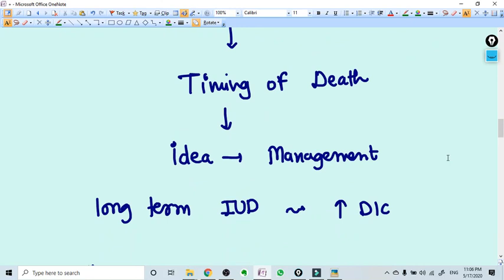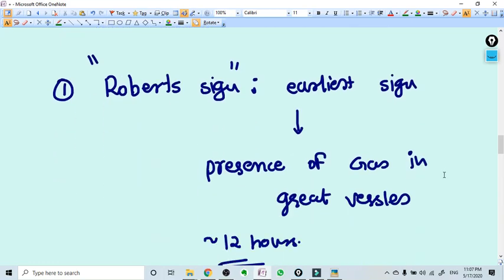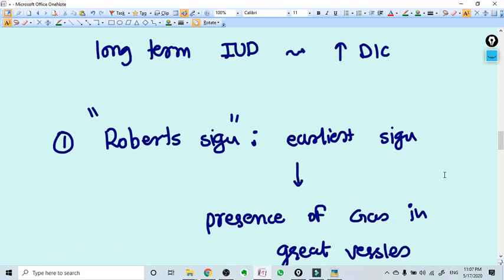That will give you the idea about the management, because long-term IUDs have higher chances of coagulation abnormalities and can result in DIC. There are subtle signs, but two signs are very important.